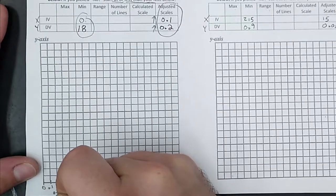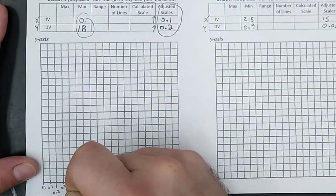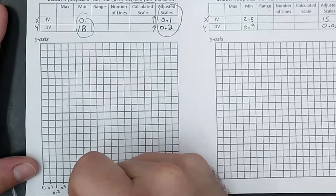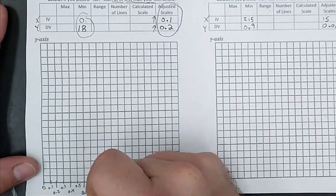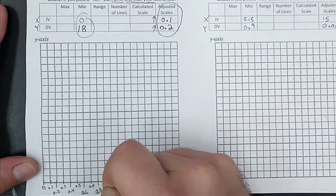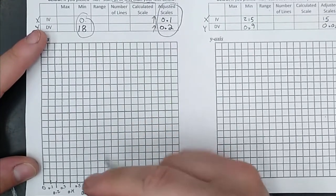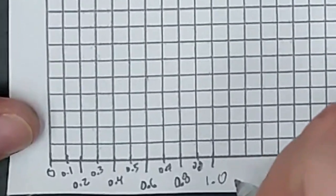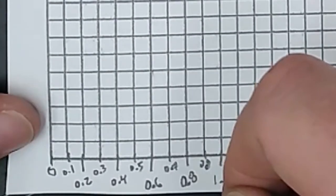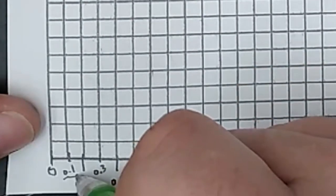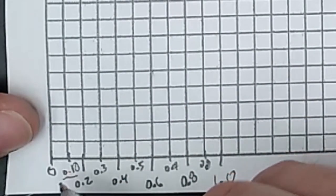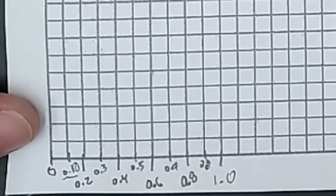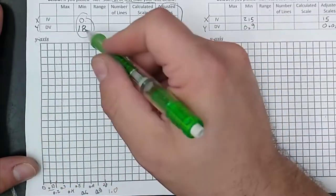Right here is 0.3, 0.4, 0.5, 0.6, 0.7, 0.8, 0.9. And then my favorite, after 0.9, we get 1.0. Not 0.10. That's just 0.1 with a 0 after it. It's tiny. That goes over here. You'll keep going all the way to the end. Same thing over here on your Y axis.